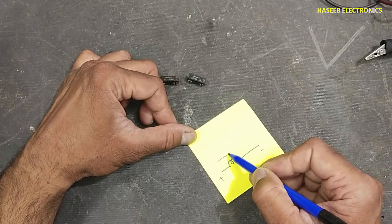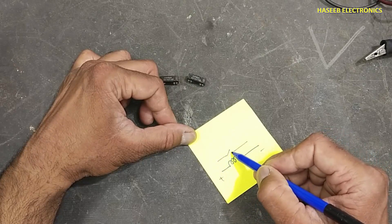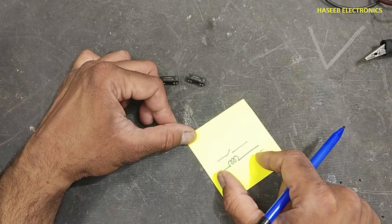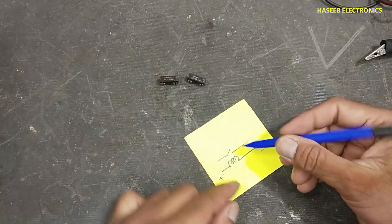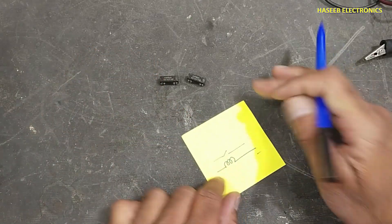It has a reed switch inside. When we apply voltage, it will make connection between these two points.